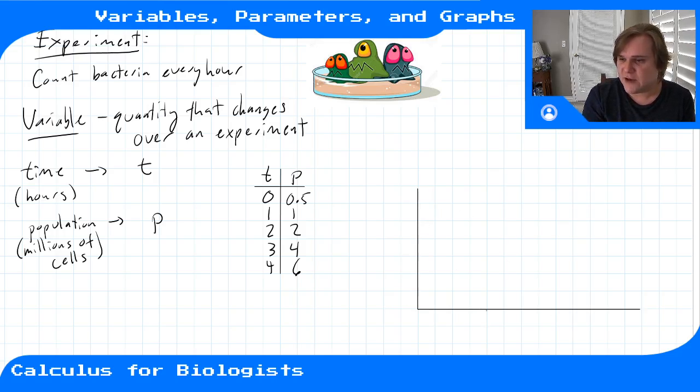So you graph things with two axes. You have your horizontal axis or the x-axis, and on the x-axis you put the independent variable—we put time here, which is measured in hours. And then on the vertical axis or the y-axis you put the dependent variable, the output of your experiment. That would be p, which is measured in millions.